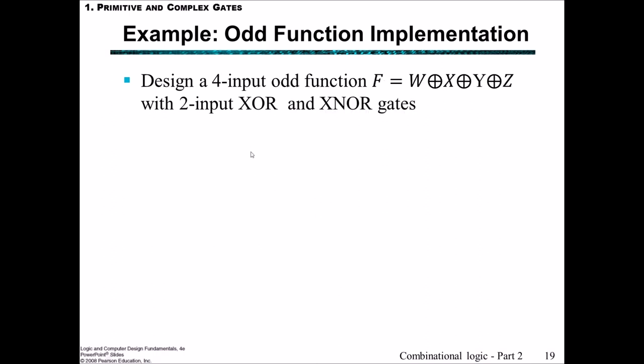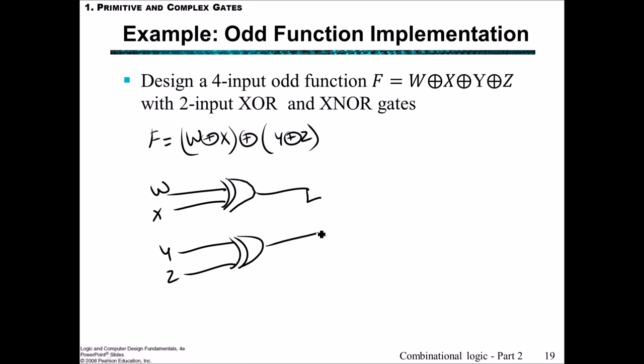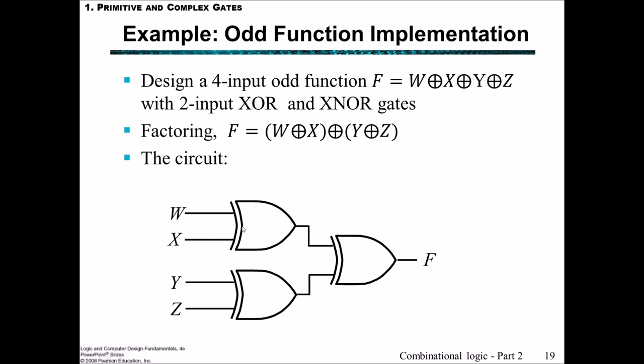So we're going to design a 4-input odd function this time. The inputs are W, X, Y, and Z, and we want to use 2-input XOR and XNOR gates. Once again we divide this up and then draw this up with our W and X XOR, and then our Y and Z. So yep, that's the same as what we got. The main thing is just seeing that you can group these two together so that you can use the two-input XORs, and seeing that even if you group it like this, the grouped function is equal to the original function and what it looks like in a circuit.